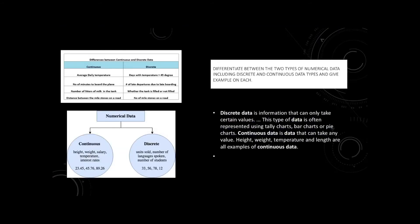My second task, PC 2.8, says to differentiate between the two types of numerical data including discrete and continuous data types and give an example on each. Discrete data is information that can only take certain values. This type of data is often represented using tally charts, bar charts, or pie charts.